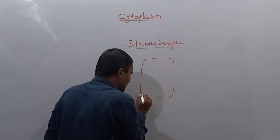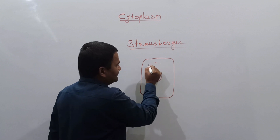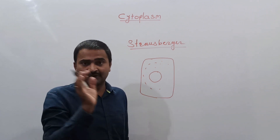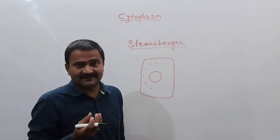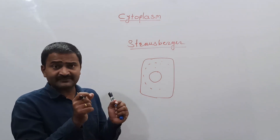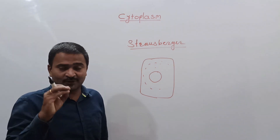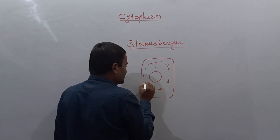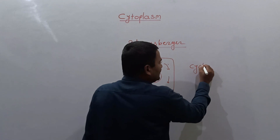In a cell, there is a plasma membrane and there is a nucleus with a nuclear membrane. The material between the plasma membrane and the nuclear membrane is considered as the cell cytoplasm. This cytoplasm is a colorless and amorphous ground substance present in the cell, and it is a non-static substance — meaning it is not steady. The cytoplasm keeps on moving in a specific direction, and this type of movement is called cyclosis.